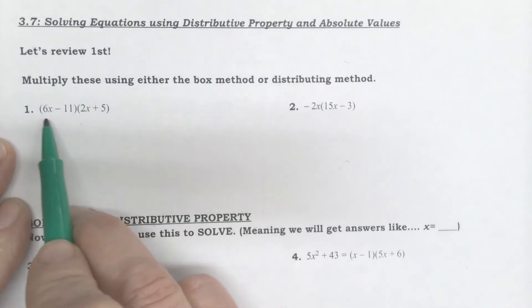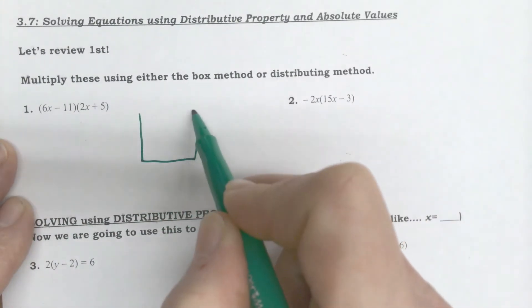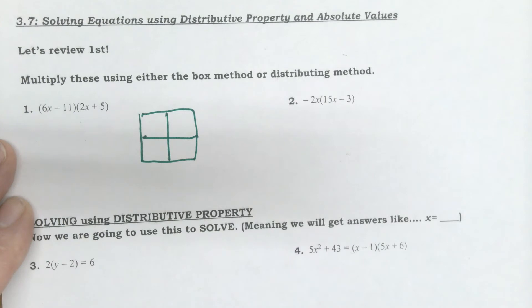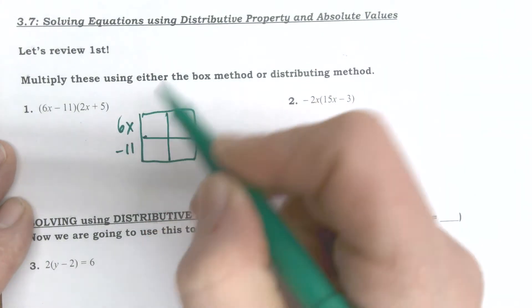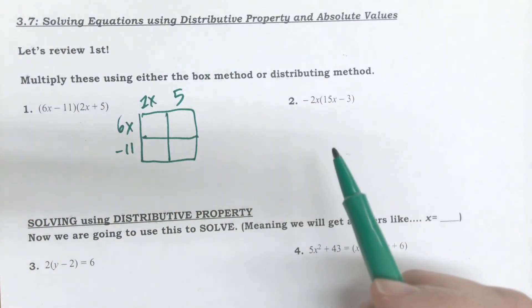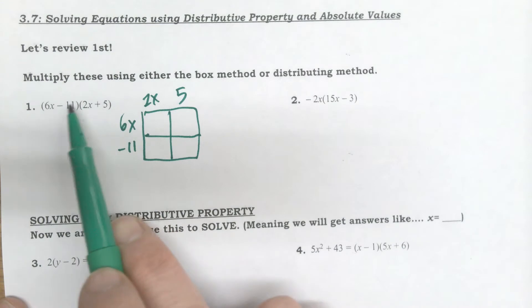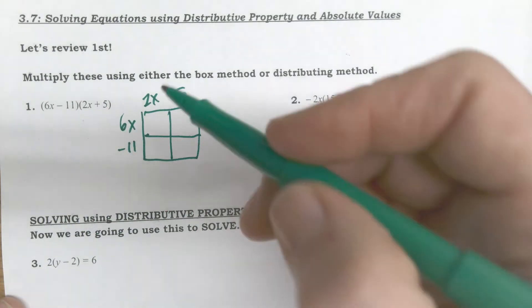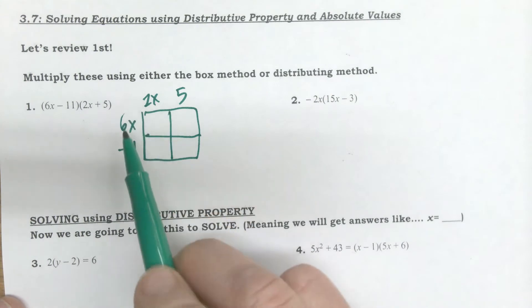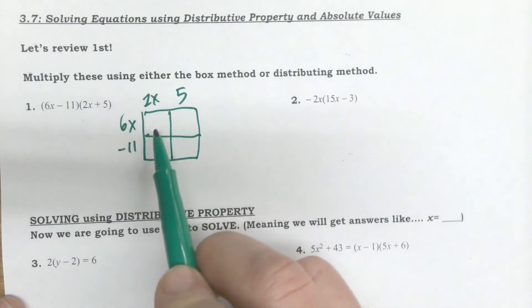Keep in mind, I typically use the box method when I have problems that are bigger, meaning two terms times two terms, because it's a great way to organize. It's a way to stop you from missing important pieces of information that can be lost if you try to distribute. But if you're good at the distributive property, maybe you can do the distributive property here. You just have to double distribute on that problem. I think the box method is the easier way to do it. So when I set up the box, remember the first one goes down the side, the second one goes across the top, and then I just multiply the little problems together.